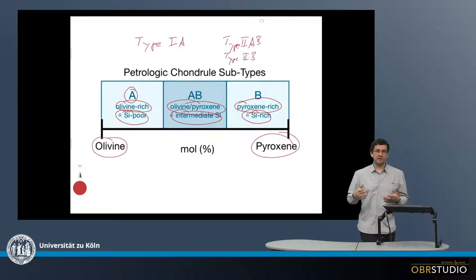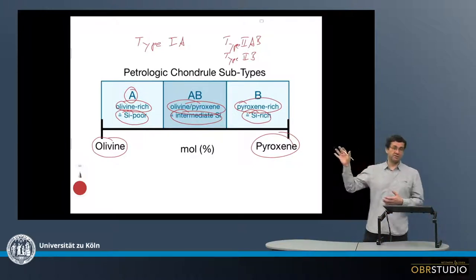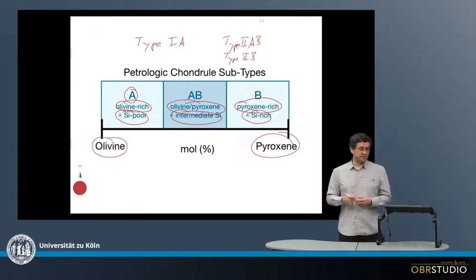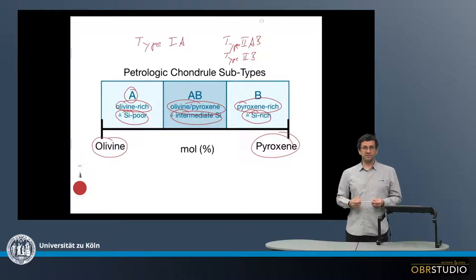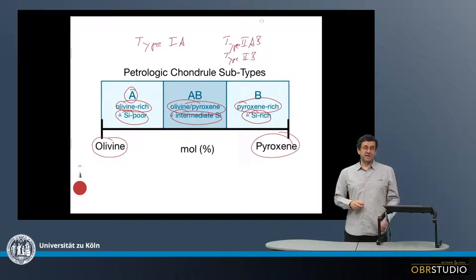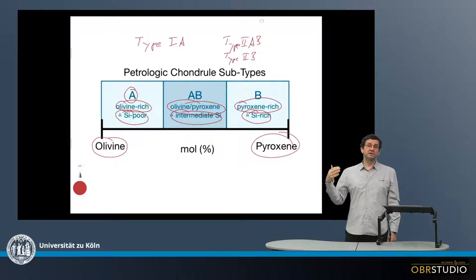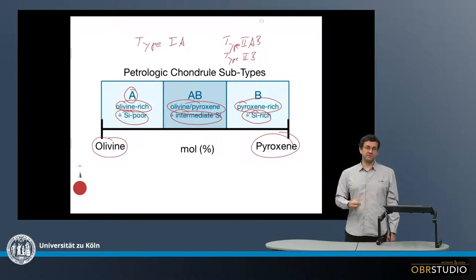This is why it is called a subtype — because these letters follow the Type 1/Type 2 classification. So this is the petrologic subtype of chondrules, and it is mainly based on the mineralogy, and according to the mineralogy, also the silicon concentration in these chondrules.